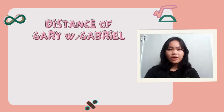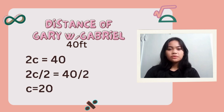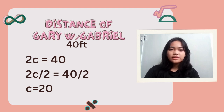The distance between Gary and Gabriel is 40 feet, which means the distance between the 2 foci is 40 feet. So 2C equals 40. Dividing both sides by 2, we get C is equal to 20.